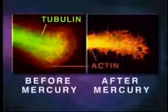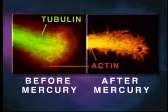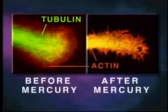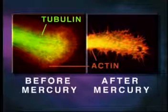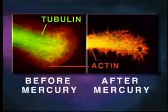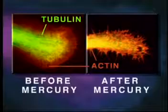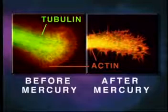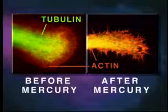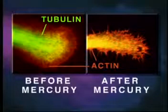Shown here is a neurite growth cone stained specifically for tubulin and actin before and after mercury exposure. Note that the mercury has caused disintegration of tubulin microtubule structure.